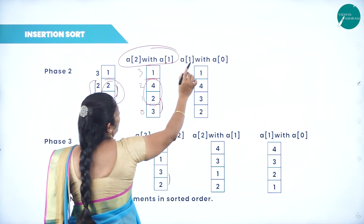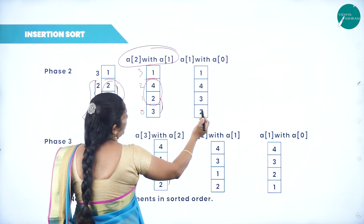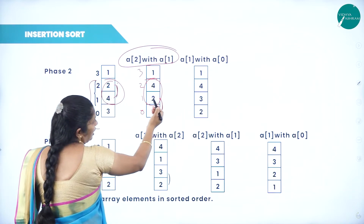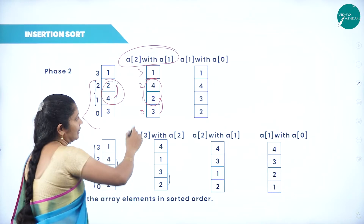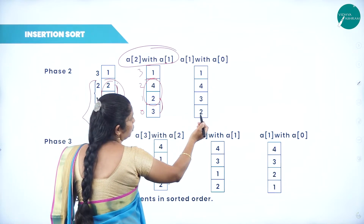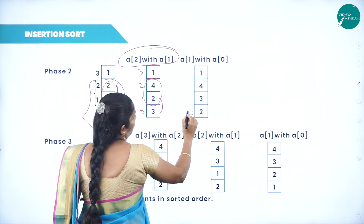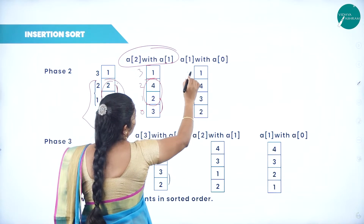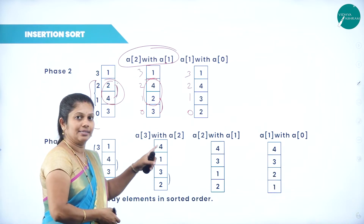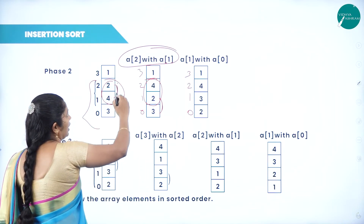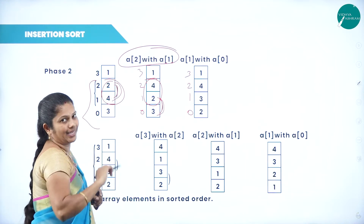A of 1 compared with A of 0: since the value at position 1 is less than position 0, swapping takes place. The result becomes 2, 3, 4, 1 at positions 0, 1, 2, 3. In the second phase, we considered 3 elements, and swapping took place between positions 2 and 1, then 1 and 0.